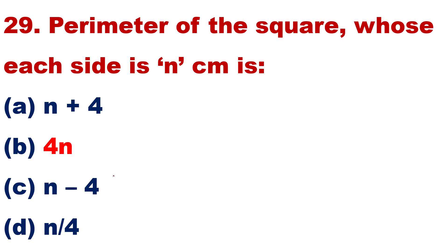Question number 29: The perimeter of the square whose each side is N cm is. Maybe your answer correct, but which is correct? You have to write in the comment box. Question number 29, correct answer, this.